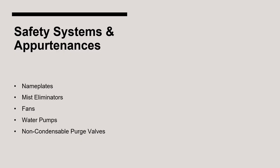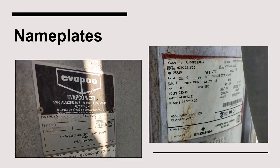As it relates to condensers, there are a number of safety systems and other appurtenances to be aware of. All condensers must be equipped with a legible nameplate provided by the manufacturer. Condenser nameplates typically include the manufacturer, model number, and serial number. Additionally, each condenser water pump has two nameplates — one affixed to the pump and one to the motor.